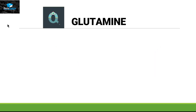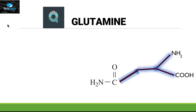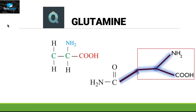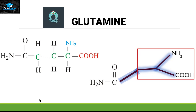Next is glutamine — the symbol is Q. We take this fork structure, extend it by one carbon, and attach the amide group to it. We take the fork structure, attach one carbon to it, then attach the amide group. This carbon attaches itself with two hydrogens in order to get stable.